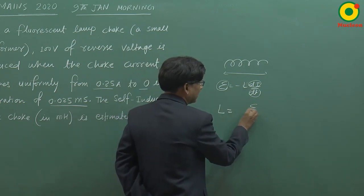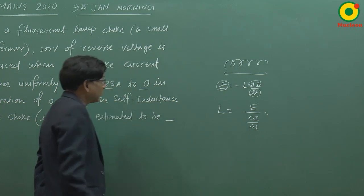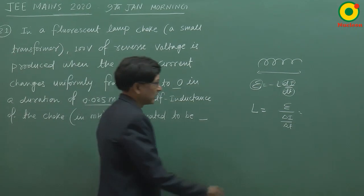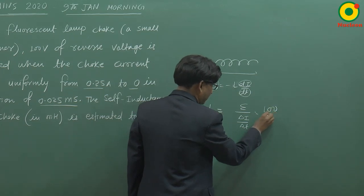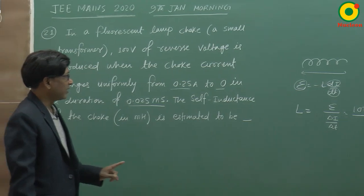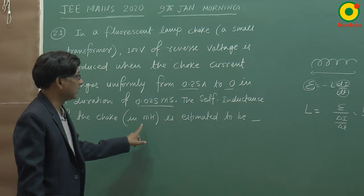तो L देखेंगे, L को लिखा जा सकता है E divided by delta I by delta T. जो EMF induce हुआ है, जो voltage induce हुआ है, वो है 100 V. इसमें दिया गया है। इसमें पूछा गया है self inductance, the self inductance of the choke in millihenry.